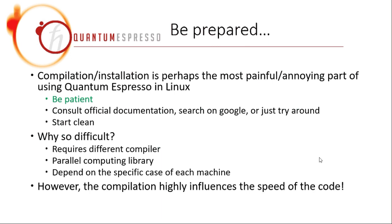Why is the compilation so difficult? It is because Quantum Espresso is written in C and Fortran, so you need a C compiler and a Fortran compiler. It also calls some external math libraries and needs a parallel computing library. All of those things work independently, but there is no guarantee there is no conflict between any of them. So if there is any conflict, the compilation will fail and the program will fail. That is why it is kind of difficult to keep everything on the same page.